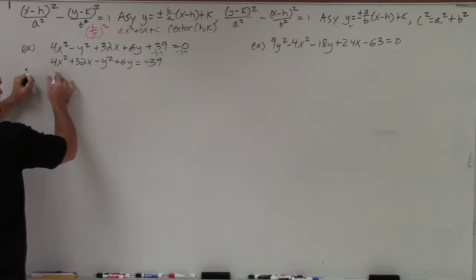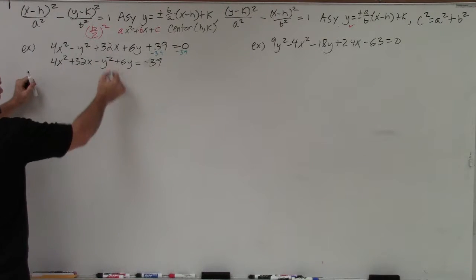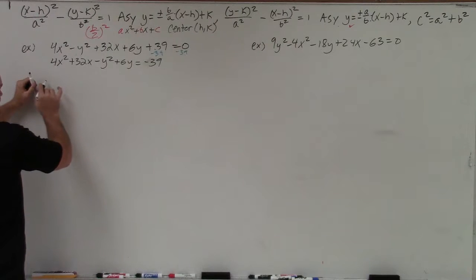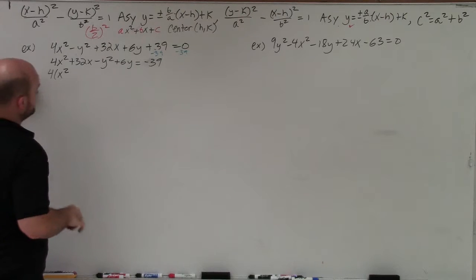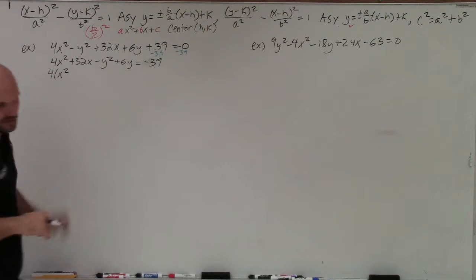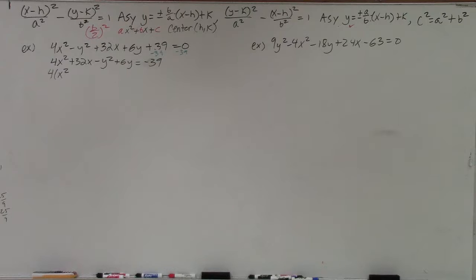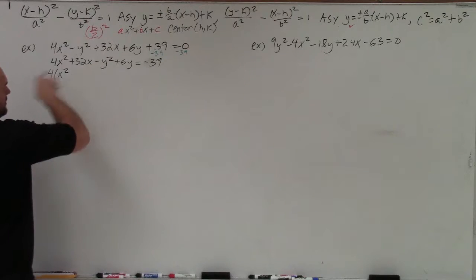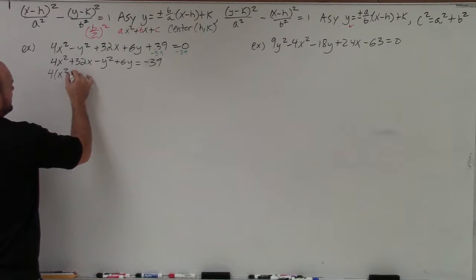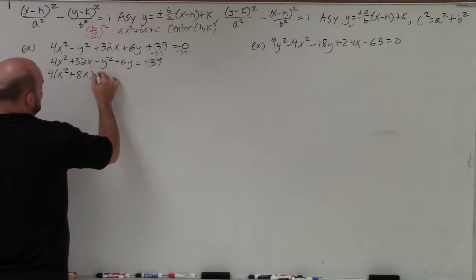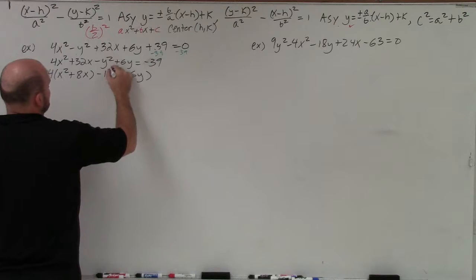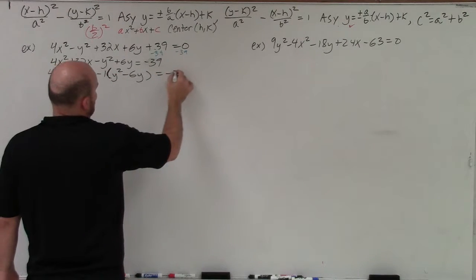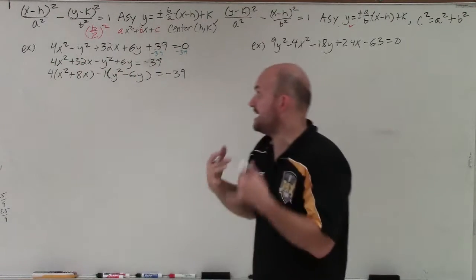I'm going to factor out the 4, leaving me with x² + 8x. And I have to factor out a negative 1 from the y terms as well, leaving me with y² − 6y. Make sure you factor out both the 4 and the negative 1.